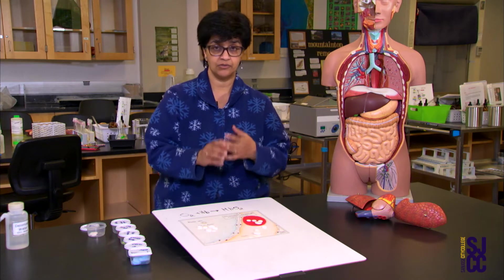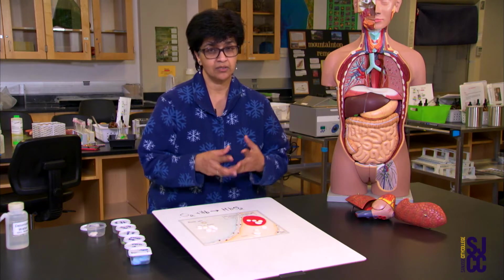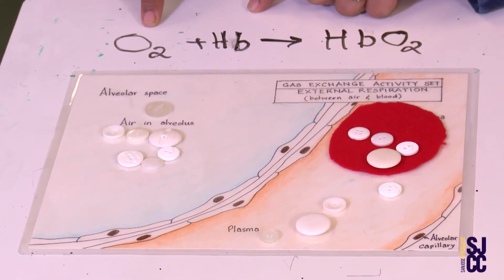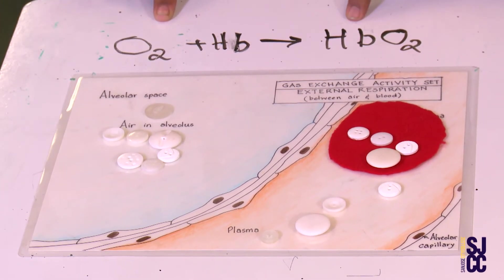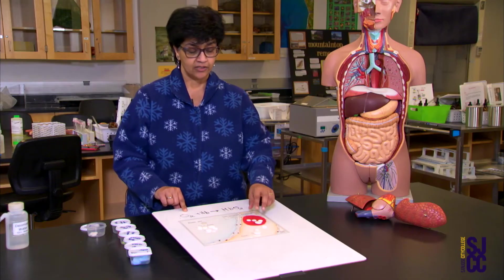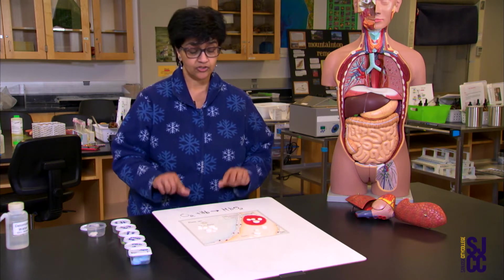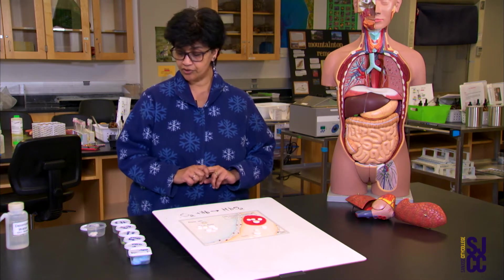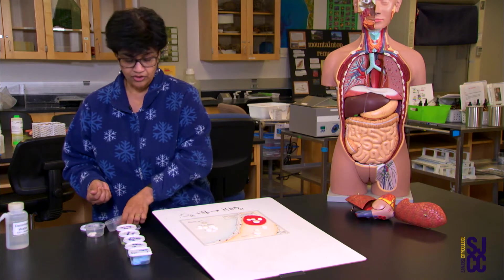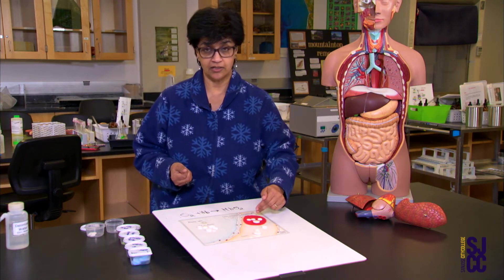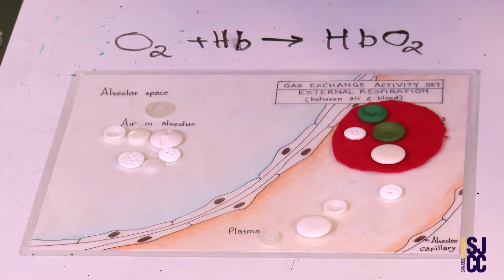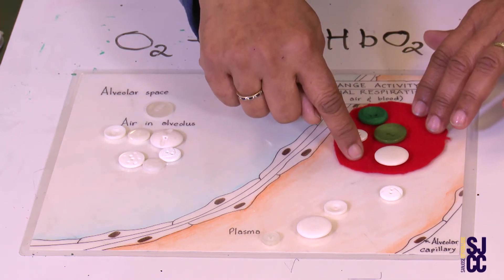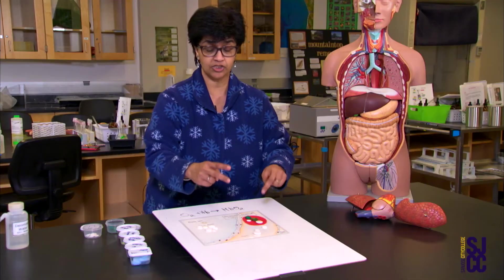The oxygen goes into the red blood cells, and in our red blood cells we have the protein hemoglobin, written with the symbol Hb. Once the oxygen goes into the red blood cell, it combines with hemoglobin to make something called oxyhemoglobin, represented by HbO2. Oxyhemoglobin is not free oxygen, so I'll represent it with dark green buttons instead of white buttons.